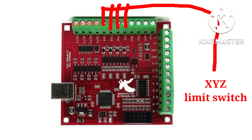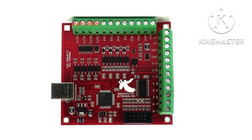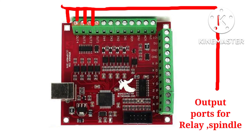These four ports are for limit switches — X axis, Y axis, and Z axis limit switches use these four ports. The last four ports are for outputs, used for the spindle relay and other accessories.